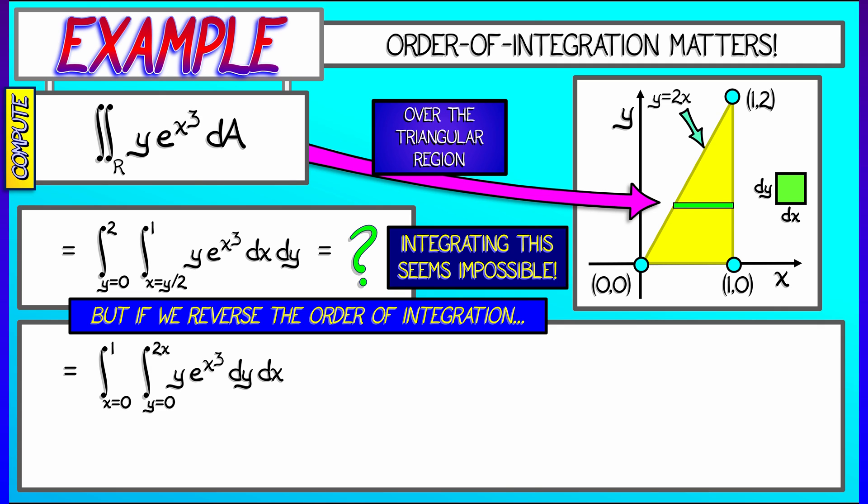Now, I can integrate y dy. That's simply y squared over 2. And when I evaluate y squared over 2 from 0 to 2x, notice that I get 2x squared. That times e to the x cubed dx is my new integral, as x goes from 0 to 1.